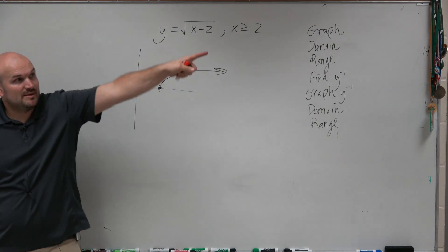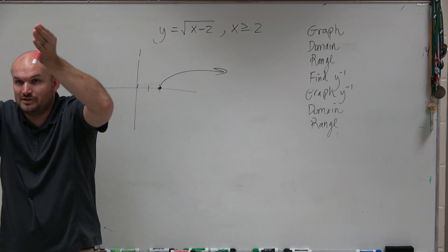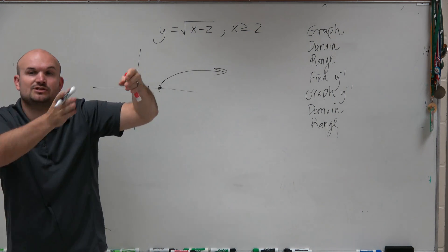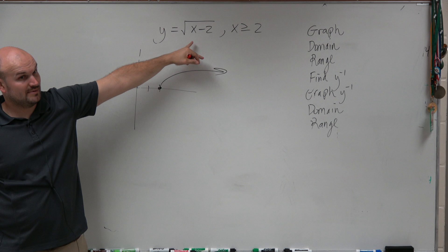You've got to know what the parent graph is. Remember, I used to have it up there. You literally take the parent graph and shift it two units to the right, because that is your transformations, correct?